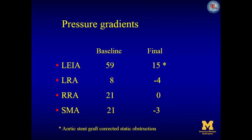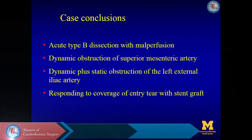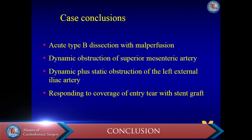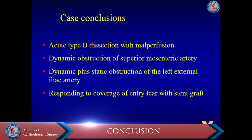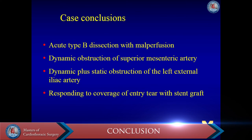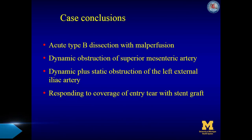These are the final pressure gradients, which show improved gradients in all of the visceral vessels, and the aortic stent graft corrected the static obstruction. In summary for this particular case: there is an acute type B aortic dissection with malperfusion, with dynamic obstruction of the superior mesenteric artery and dynamic plus static obstruction of the left external iliac artery. Both obstructions resolved after coverage of the entry tear with the stent graft.